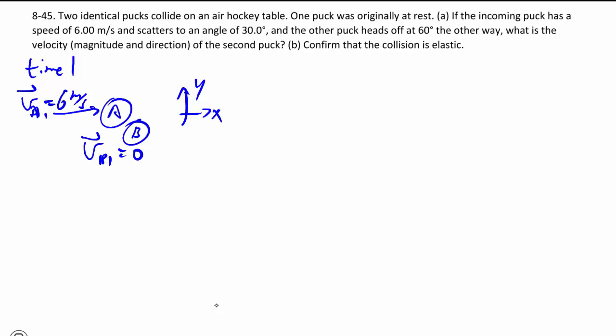VB1 is equal to 0. And at time 2, I'm going to continue with that track, but A shoots off that way at 30 degrees at some unknown speed, but we know the direction, and we also know the other one heads off 60 degrees the other way. So B is here, moving downwards like that.